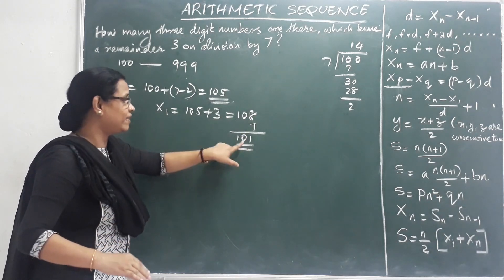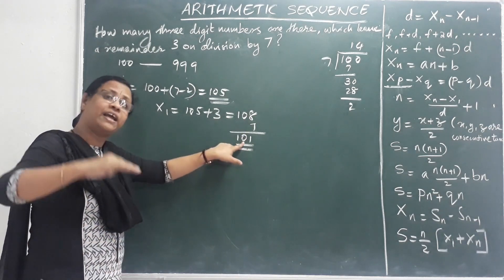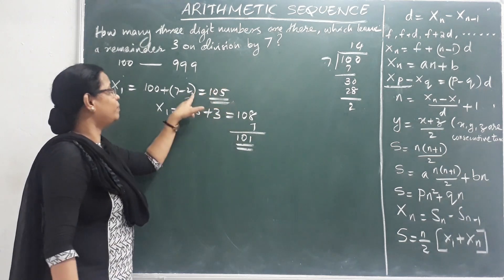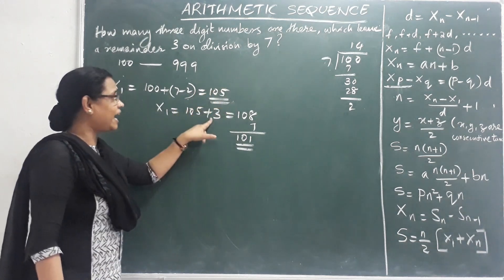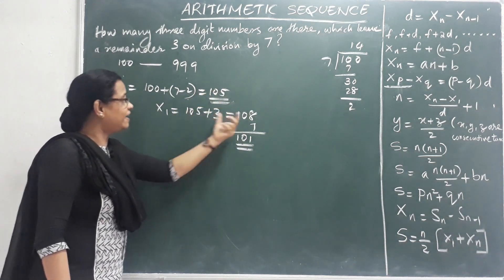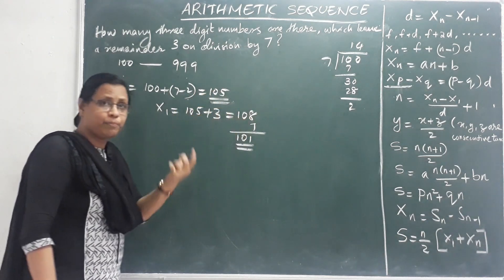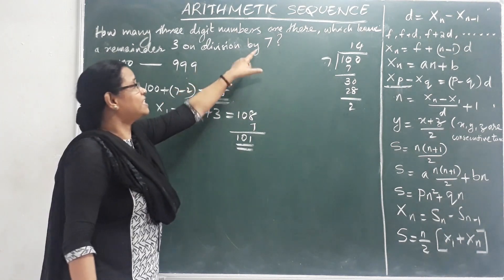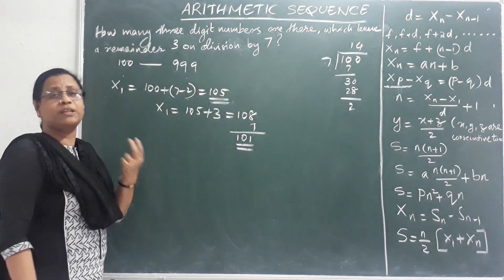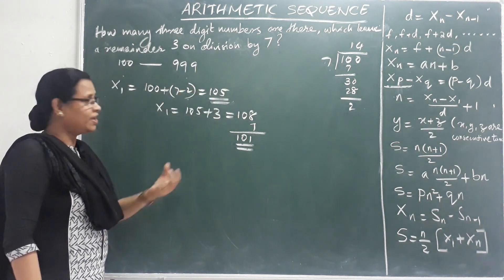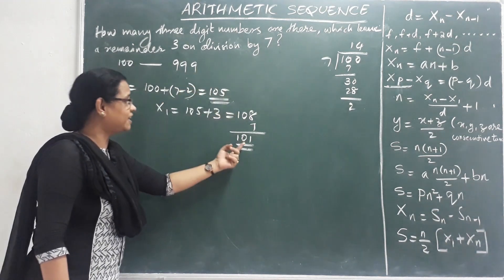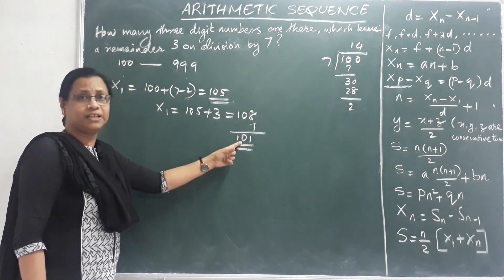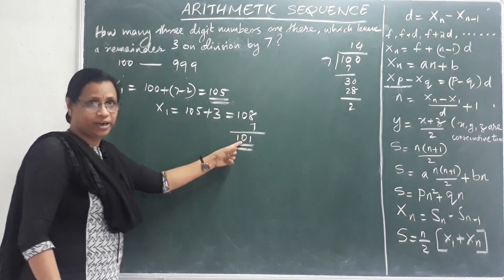We check the number just above 100. Then we check one number above. The first 3-digit number leaving remainder 3 when divided by 7 is 101.